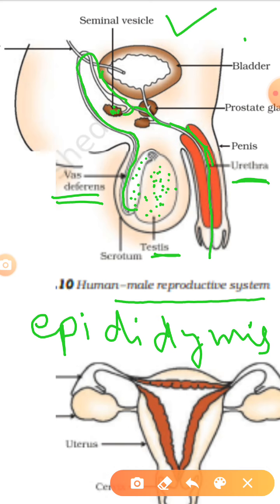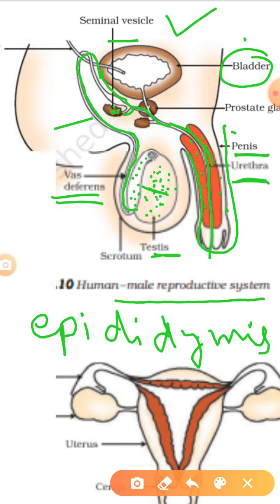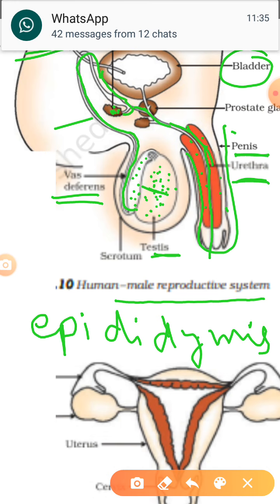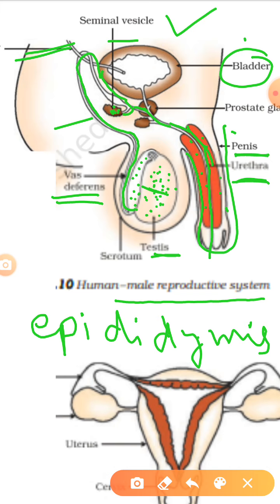So the pathway is: testes, then epididymis, then vas deferens, then seminal vesicles, then ejaculatory duct, also known as urethra. The urethra is covered with muscles — you can see this red structure — and the whole muscular structure is known as penis. It is the copulatory organ in the male.